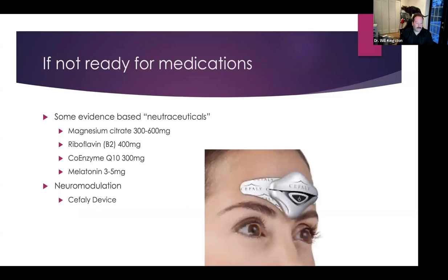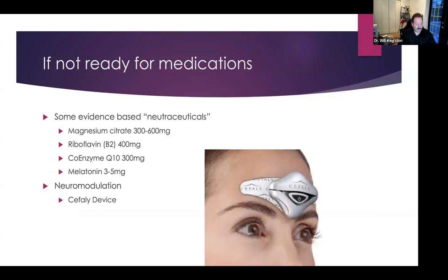For people who are just not ready for medications, there are things we can do. We term these nutraceutical prophylaxis. There's some evidence for magnesium, vitamin B2, coenzyme Q10, and melatonin—all of these have actual studies suggesting they may be helpful for migraine. And then a device called the Cefaly device, which can be obtained online, is quite safe to use and may be a good choice for people who are not keen on medication or who have had bad experiences with medication.